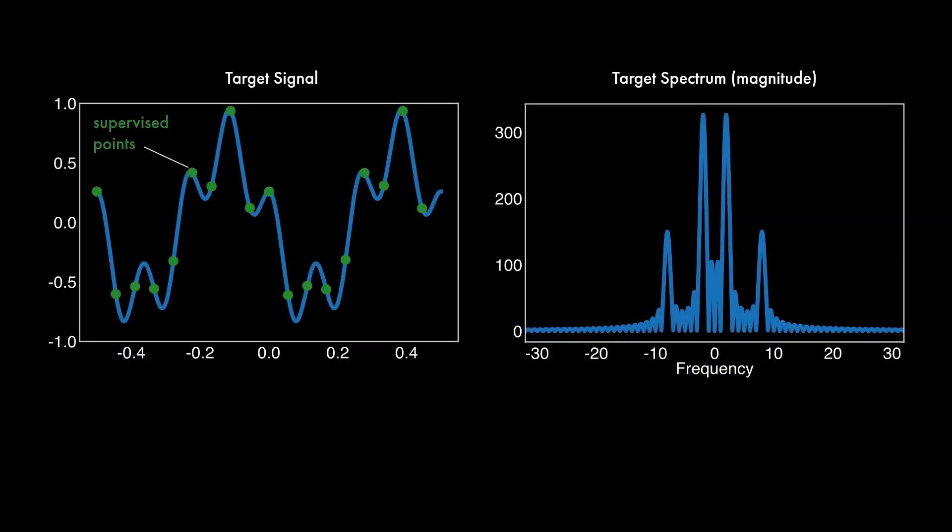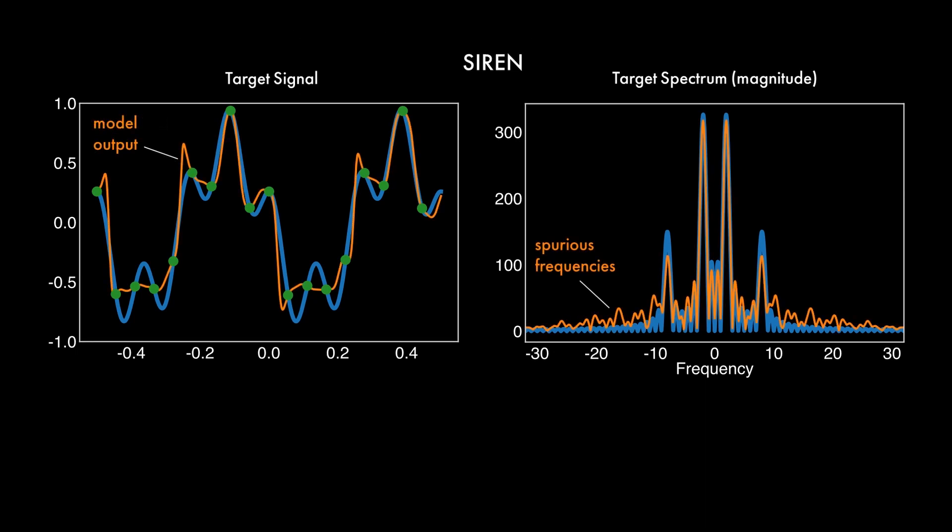We motivate our architecture with a 1D example. Supervising with SIREN or Fourier features results in artifacts between the supervised points. A Fourier transform of the densely sampled network output shows the corresponding non-zero high-frequency components.